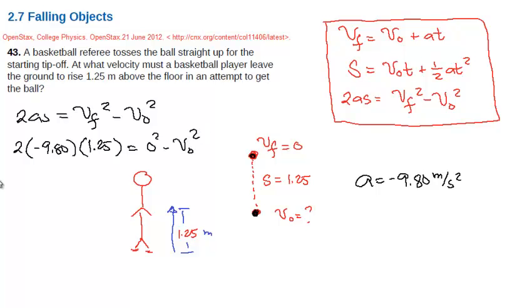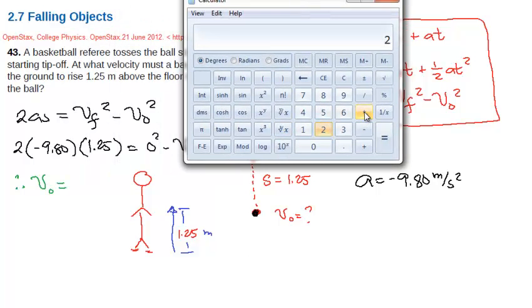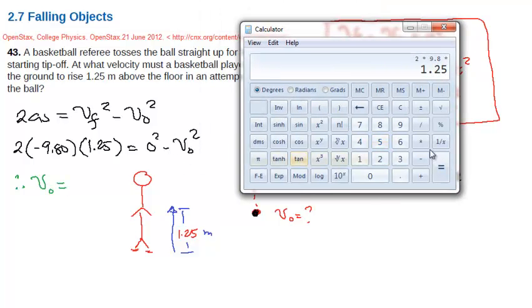So from there, I think it's clear to say, if we do the math for that, if we do the math for this one, let us try to do it. So 2 times 9.80 times 1.25. I didn't write the negative because I will divide it by negative one later.